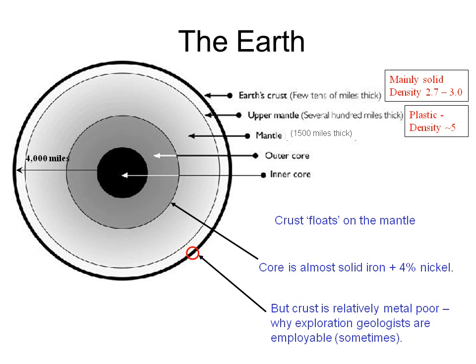Everyone has seen diagrams of the cross-section of the Earth like this. The distance from the surface of the Earth to the center of the core is about 4,000 miles or 6,400 kilometers. The deepest drill hole ever sunk reached just 12.2 kilometers below surface — one-fifth of one percent of the distance to the center of the Earth. So diagrams like this are based only on indirect measurements, including topography, bathymetry, observations of surface rocks, deep rock samples brought to the surface by volcanic activity, and seismic, gravity, and magnetic data, and laboratory experiments.